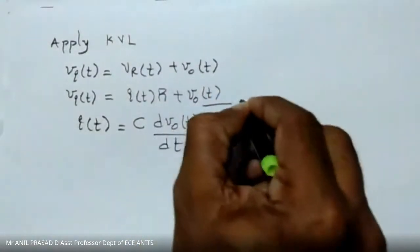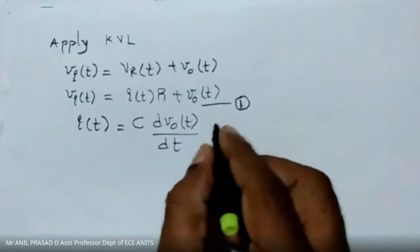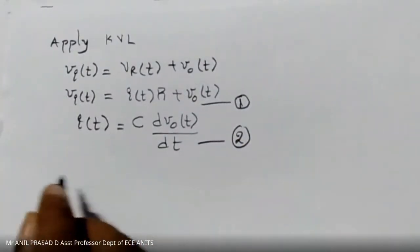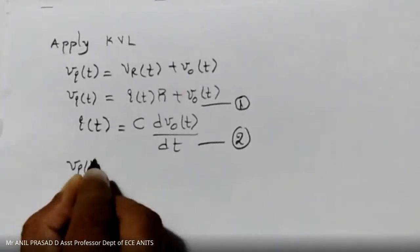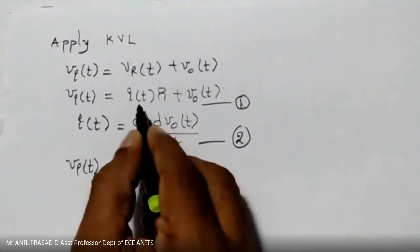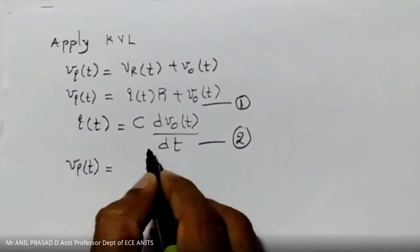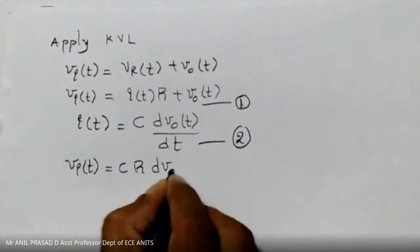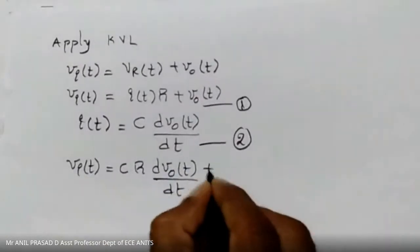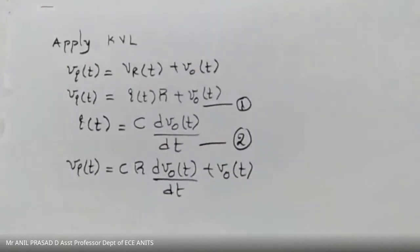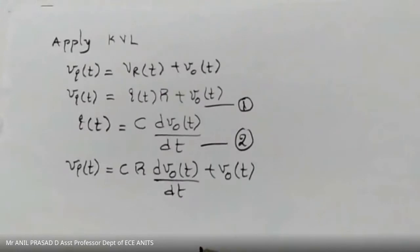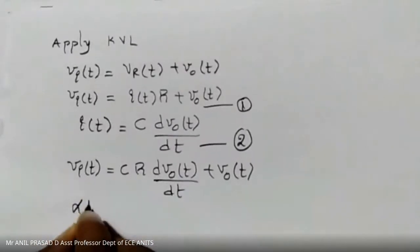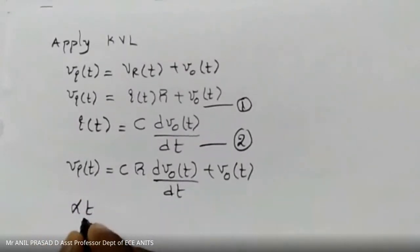Substituting equation two into equation one, we get: v_i(t) equals C*R*(dv_naught(t)/dt) plus v_naught(t). Since v_i(t) equals alpha*t for t greater than zero, we now have the differential equation relating input and output.